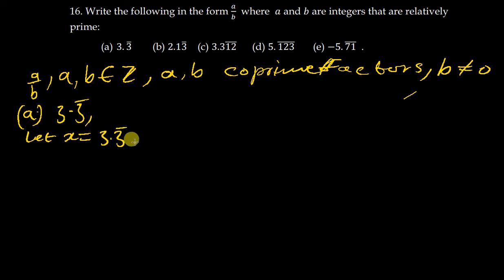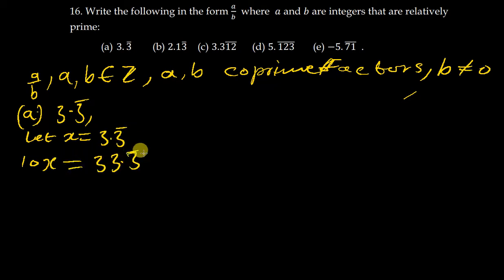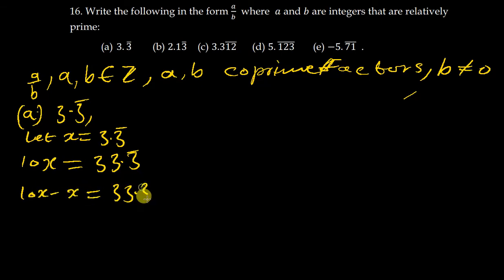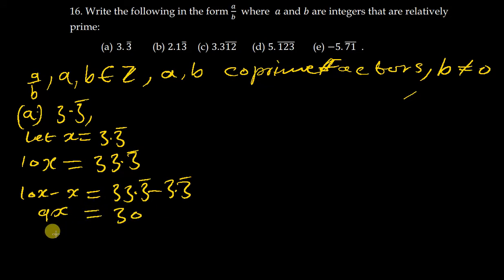The next step is to move the point to cover the repeating number, moving one step. Moving one step is the same as multiplying by 10 on both sides. So 10x equals 33.3 bar. We can now subtract the first equation from the second: 10x minus x equals 33.3 bar minus 3.3 bar, which gives us 9x equals 30.